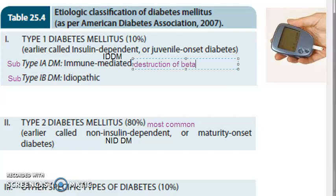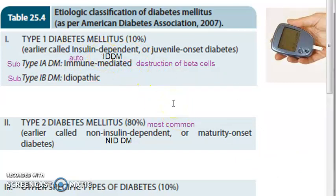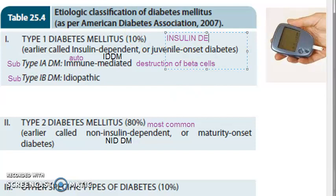The immune system attacks the beta cells of the pancreas - this is autoimmune mediated destruction of beta cells. Insulin is made by the beta cells of the pancreas, so if those cells are destroyed by the immune system, this leads to insulin deficiency. That is the core problem in type 1a.